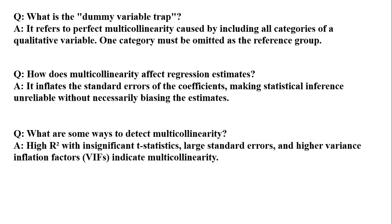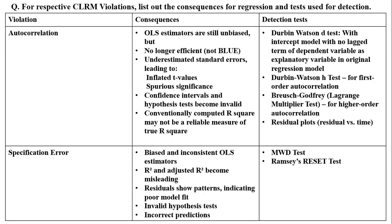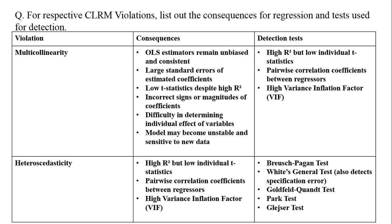The next two questions you can see on the screen. For the respective CLRM violations — multicollinearity, heteroskedasticity, autocorrelation, and specification error — a table has been created showing the consequences and detection tests for each. You can have a close look at the various tests listed there.